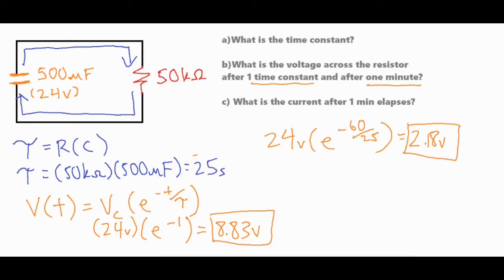Now for my final step I'm going to go ahead and find the current after one minute elapses. I'm going to show you how we can solve for that two different ways and the way that I would choose initially is for sure just using Ohm's law. Current is voltage over resistance at that particular moment in time. So at that particular moment we know that the voltage across the capacitor is 2.18 volts, the resistance has always been 50 kilo ohms. So remember when we put that in our calculator we're going to put in 50,000 and that would leave us with a fairly small current of 44 micro amps.